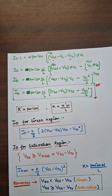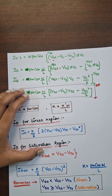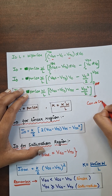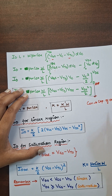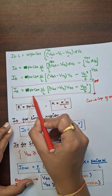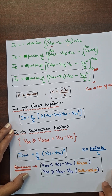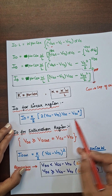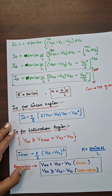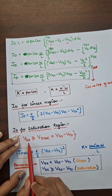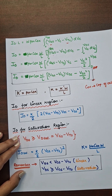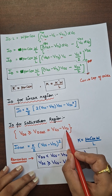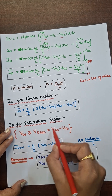To simplify, we define K-prime as μn·Cox, where μn is the mobility of the electron and Cox is the capacitance of the oxide. This whole term can be considered as K. For the linear region, the ID formula remains as derived. For the saturation region, VDS is greater than or equal to VGS minus VTO, so we substitute VDS with VGS minus VTO in the formula.